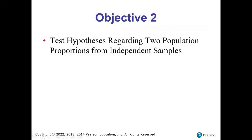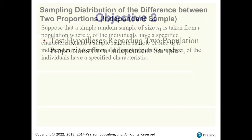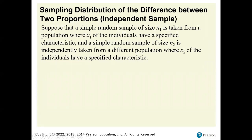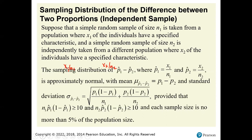Let's go through the process of how we test these hypotheses. Suppose a simple random sample of size N1 is taken from a population where X1 of the individuals have a specified characteristic, and a simple random sample of size N2 is independently taken from a different population where X2 of the individuals have that characteristic. We compare X1/N1 to X2/N2. The sampling distribution of P1-hat minus P2-hat is approximately normal with mean P1 minus P2.